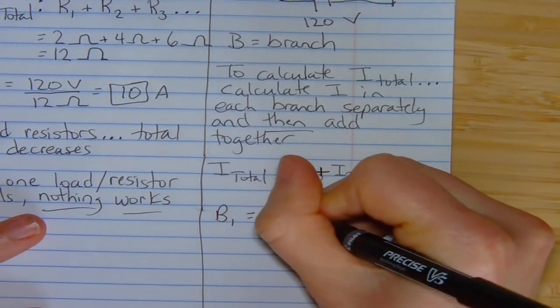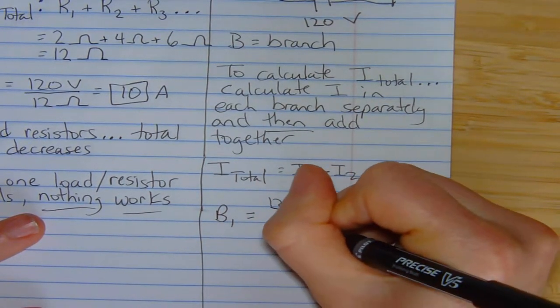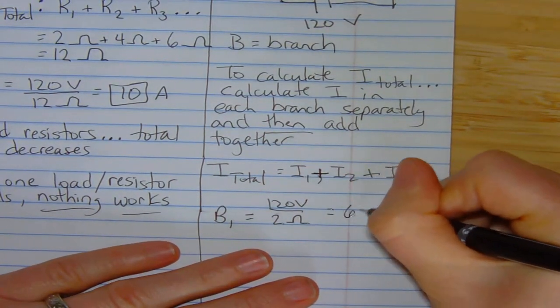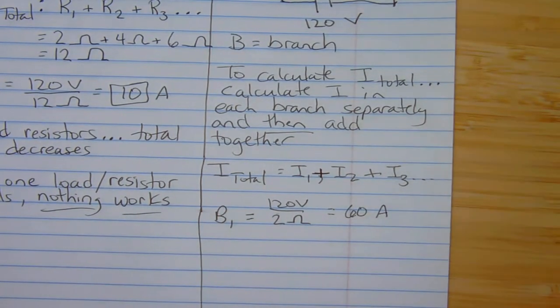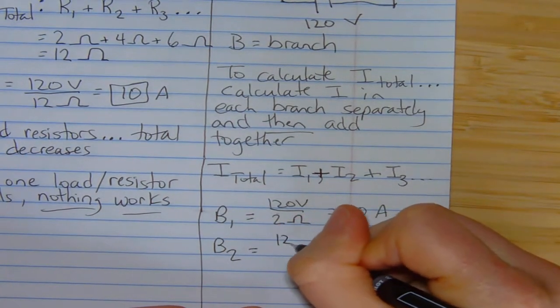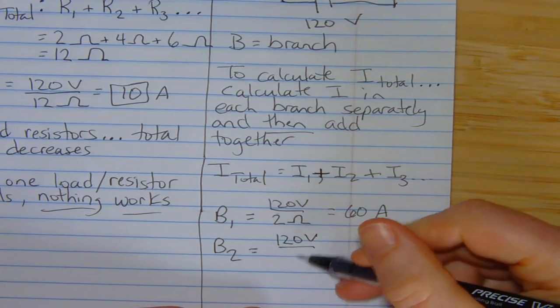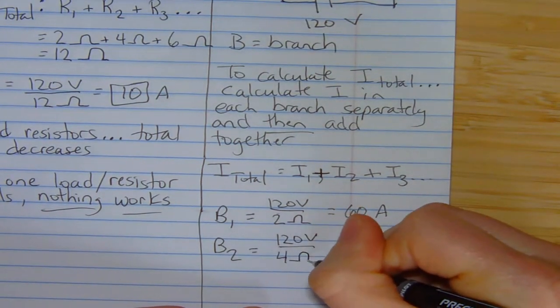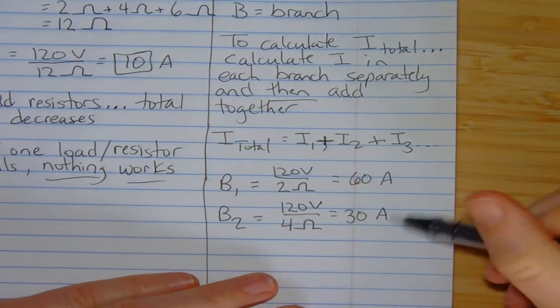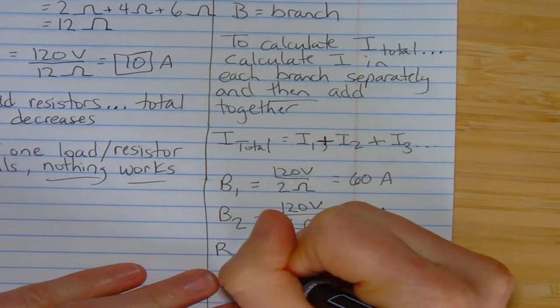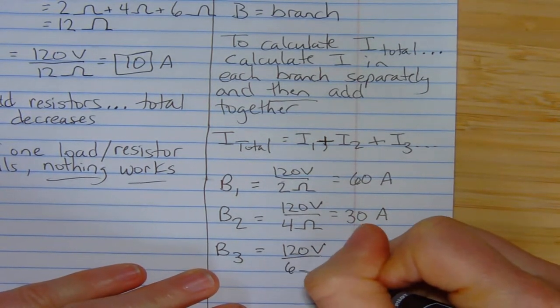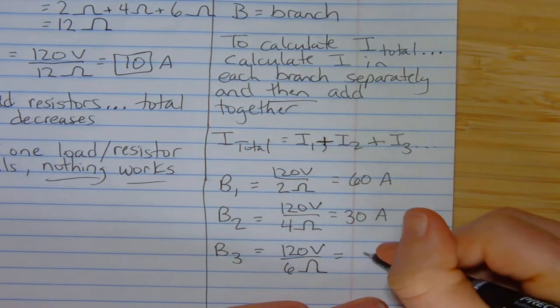Branch one, 120 volts. It's always VIR, divided by two ohms, because that's the resistance. 120 divided by two means whatever device you have going in branch one is going to have 60 amps of current going to it. Branch two gets the full push, because, remember, it has its own path to the outlet. So, 120 volts divided by four ohms. That's got 30 amps going to it. So, there's 60 going to, let's say it's room one. 30 going to room two. Branch three. 120 volts. And in this one, there's six ohms of resistance. 120 by six is 20.